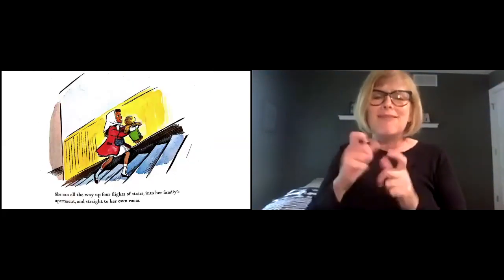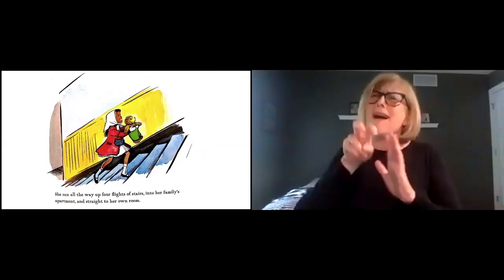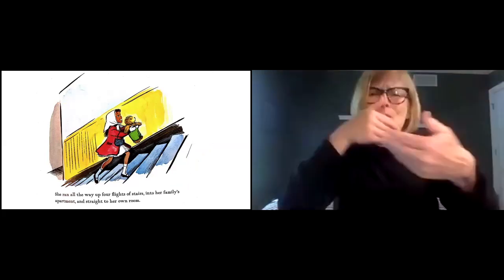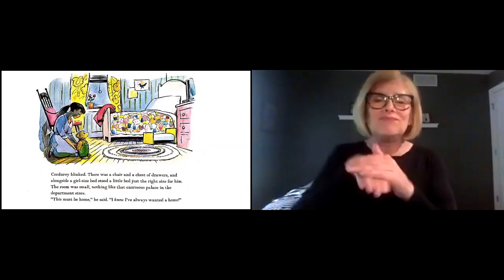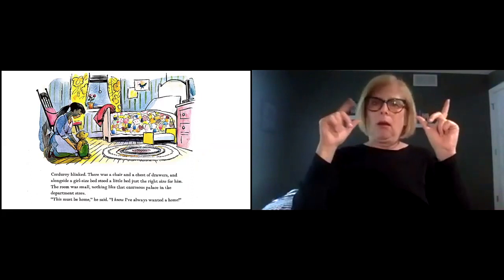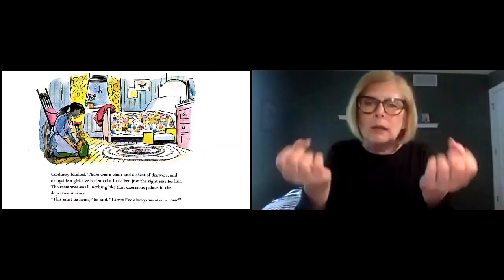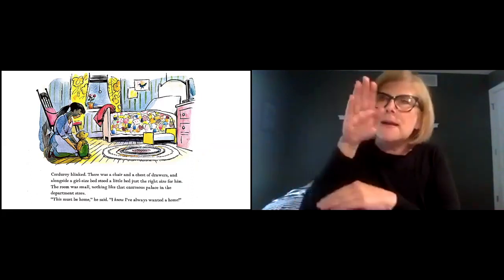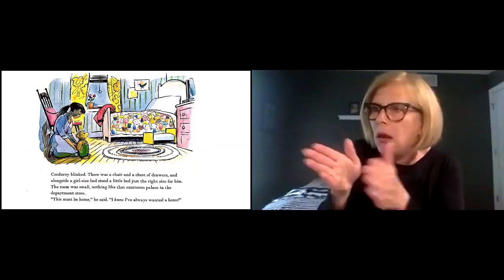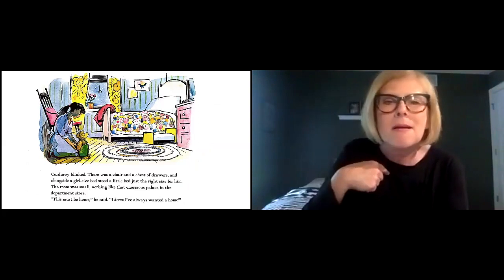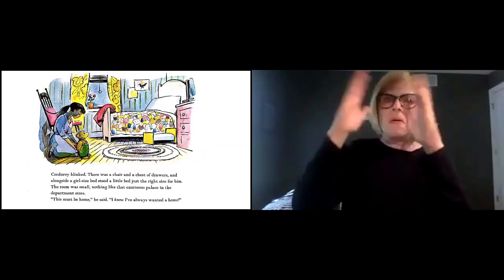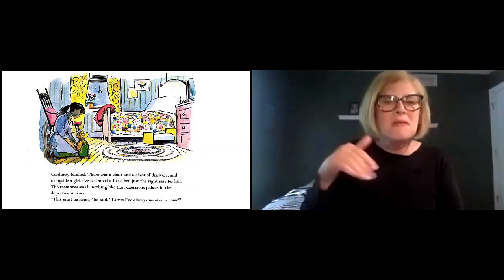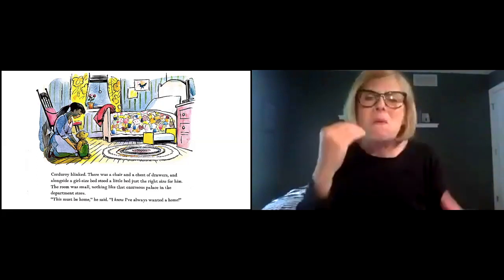She ran all the way up four flights of stairs into her family's apartment and straight to her own room. Corduroy blinked. There was a chair and a chest of drawers. And alongside a girl-sized bed stood a little bed just the right size for him. The room was small, nothing like the enormous palace in the department store. This must be home, he said. I know I've always wanted a home.